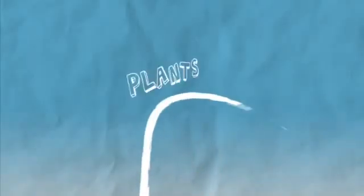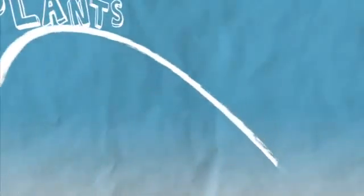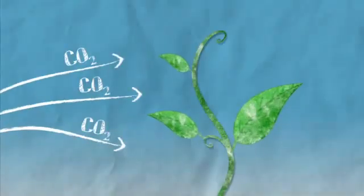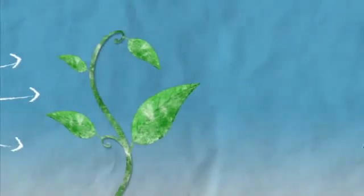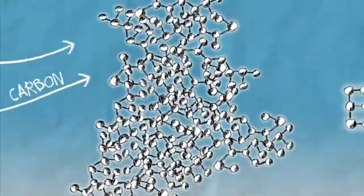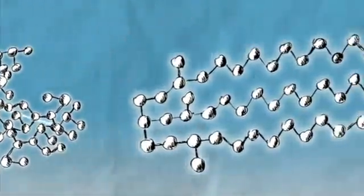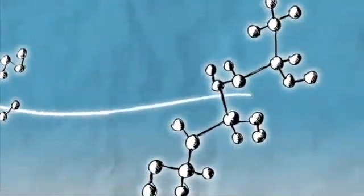Carbon goes from the air into plants. Remember what happens in photosynthesis: green plants remove carbon dioxide from the atmosphere and then put the carbon to good use — which in plant terms means they make complex molecules such as proteins, fats, and carbohydrates, all incorporating the carbon.